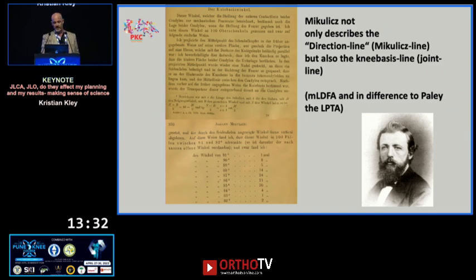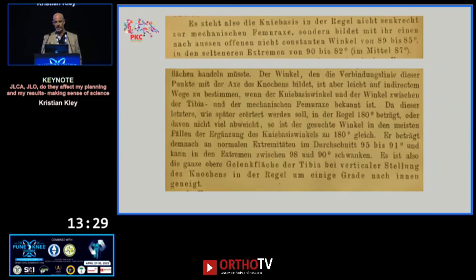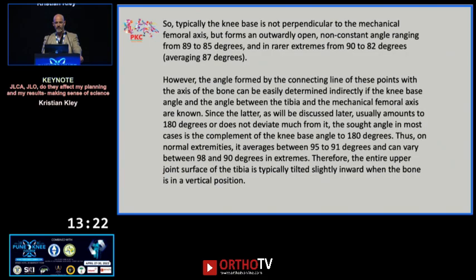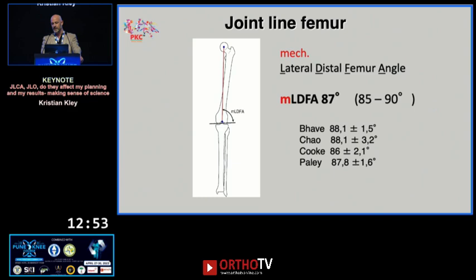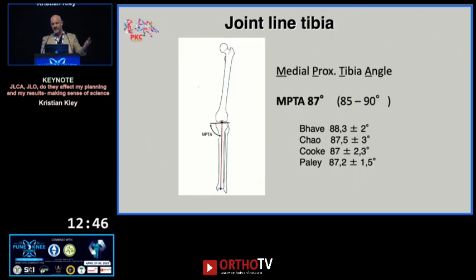Here is the table where he summed up all the values from the 100 specimens he examined. This is all in German, so I translated it. He found that the knee base is not perpendicular to the mechanical femoral axis, but forms an outwardly open, non-constant angle from 85 to 89 degrees, averaging at 87. This is exactly what we confirmed 150 years later. For the tibial side, the angle is the complement to 180 degrees — leading to exactly 87 for the MLDFA and approximately 87 for the MPTA. Nothing new — it has been around always.